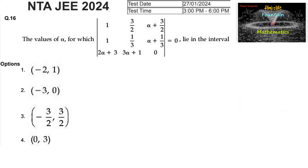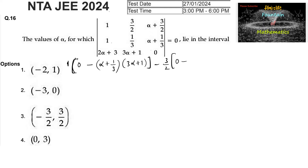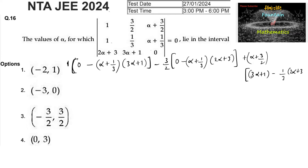Find the values of alpha for which the determinant of the matrix with entries 1, 3/2, α+3/2; 1, 1/3, α+1/3; 2α+3, 3α+1, 0 is equal to 0. Let's find the determinant: 1 times of (1/3 × 0 − (α+1/3)(3α+1)) minus 3/2 times of (1×0 − (α+1/3)(2α+3)) plus (α+3/2) times of (1×(3α+1) − 1/3×(2α+3)) is equal to 0.